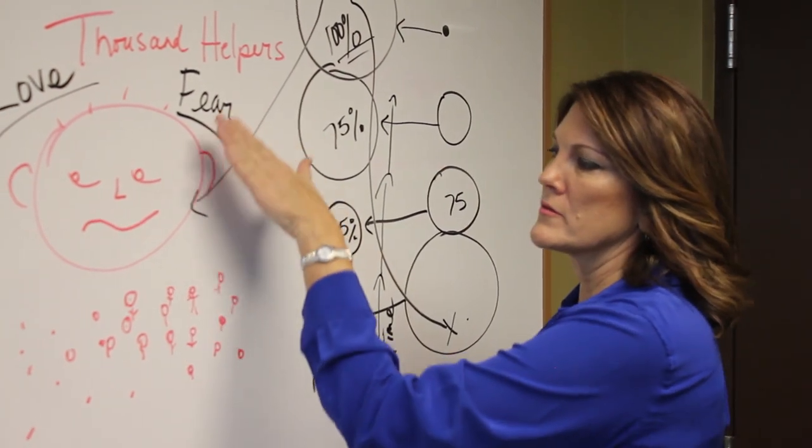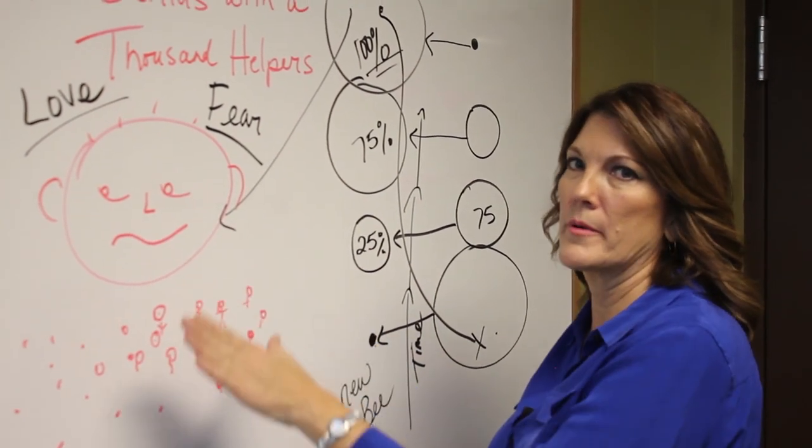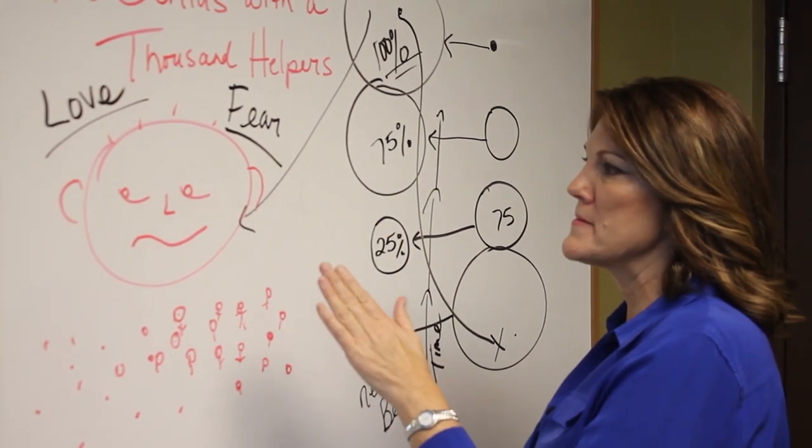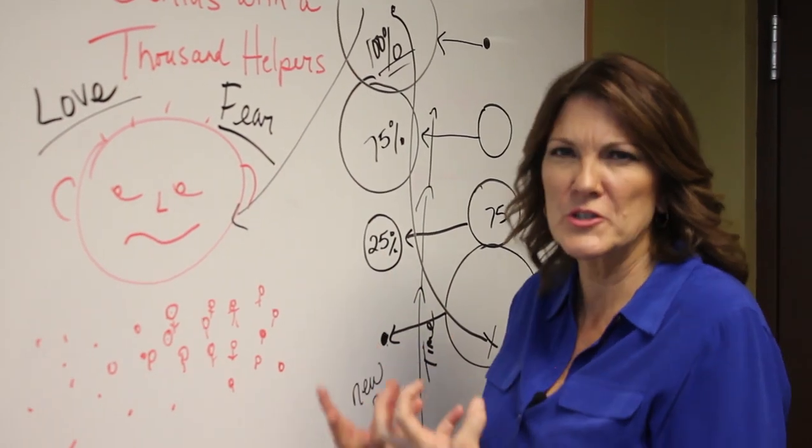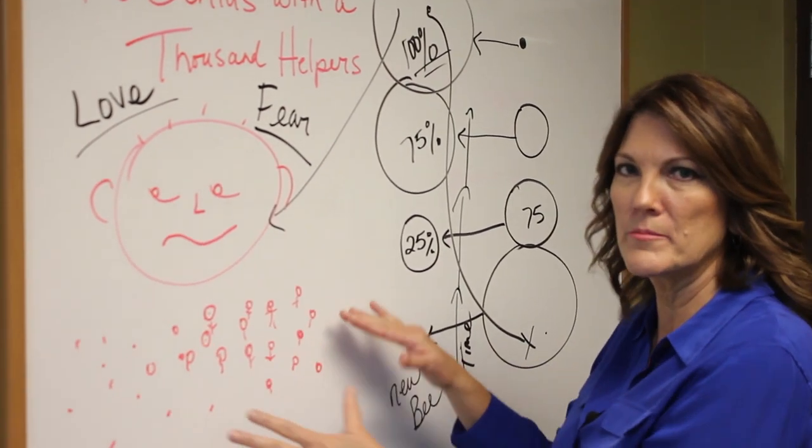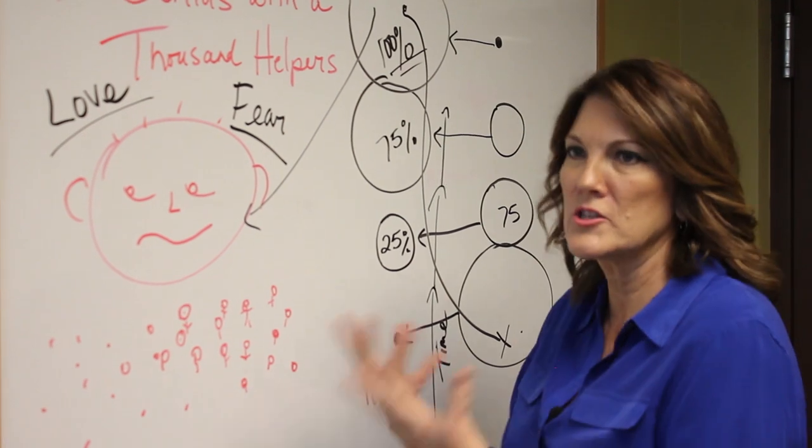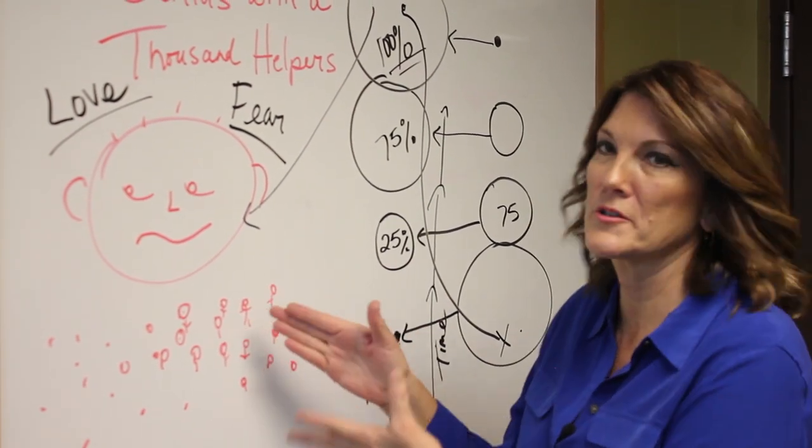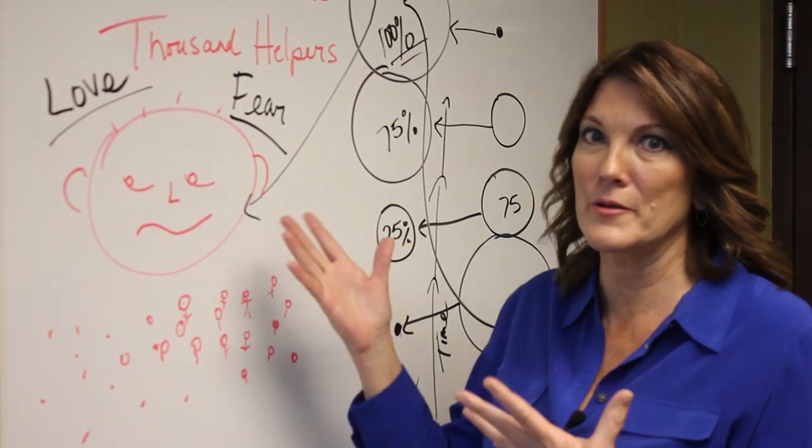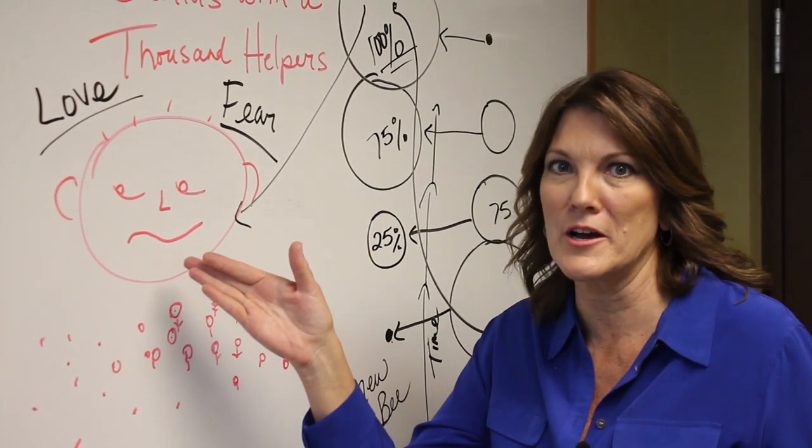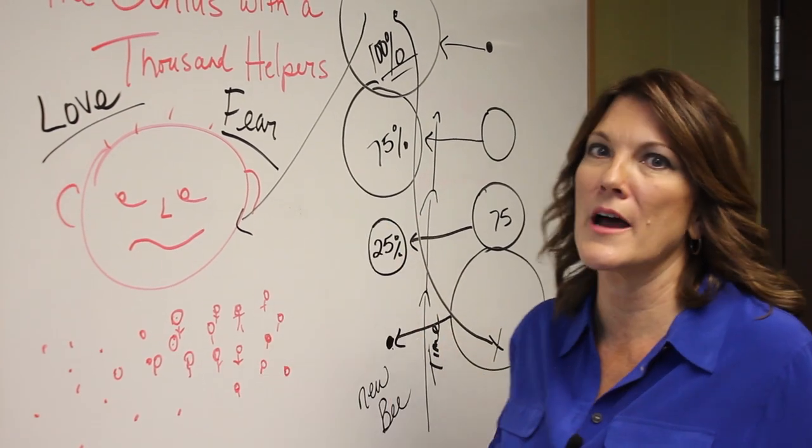The genius is running their business or their department under fear, fear-based leadership, which is also scarcity mindset. This person feels that if they bring any of these people up and teach them and impart to them some of their knowledge, that person might even get better than they are at that task or that job, and they might lose their job. Somebody else might outshine them.